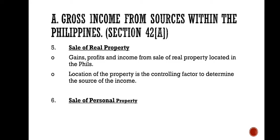Number 5 is sale of real property. The gains, profits, and income from sale of real property located in the Philippines. The location of the property is the controlling factor to determine the source of the income. For services, the determining factor is the place of service. Here, for sale of real property, the location of the property is the controlling factor.